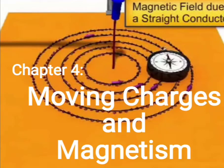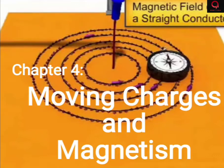This chapter, 'Moving Charges and Magnetism,' covers terms already familiar to us. Moving charges can simply be called current, so this chapter can be renamed 'Electricity and Magnetism.' We have already learned about electricity, magnetism, electric fields, and magnetic fields. However, this chapter deals specifically with the interrelation between electricity and magnetism.